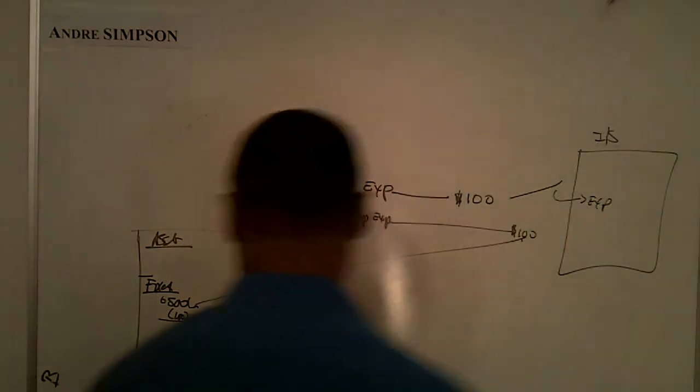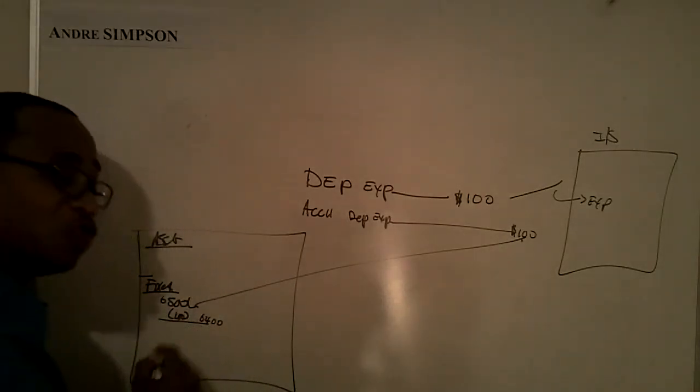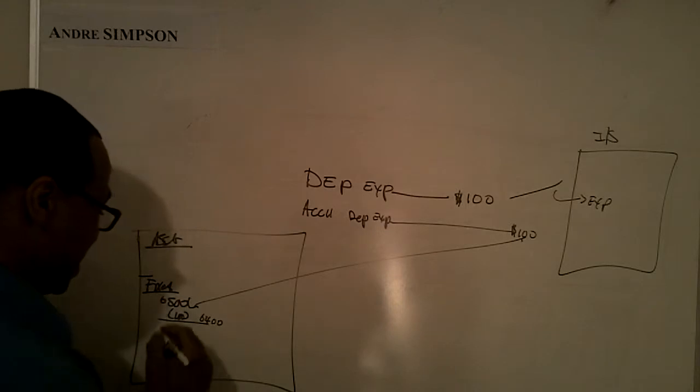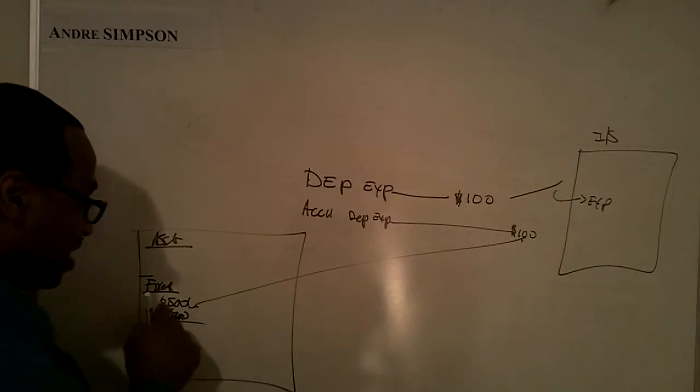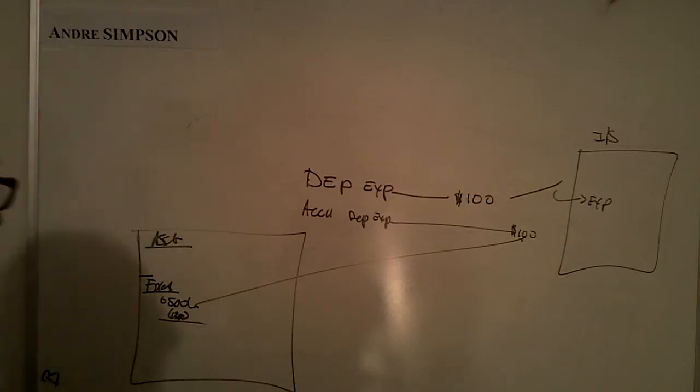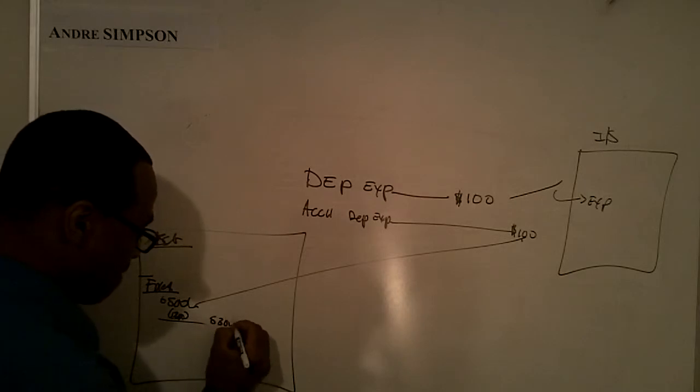What's going to happen is that this account right here, this account is going to grow. So, accumulated depreciation at the end of the year will have a balance of $1,200, and this amount right here will actually have a balance of $5,300.